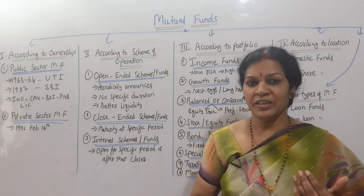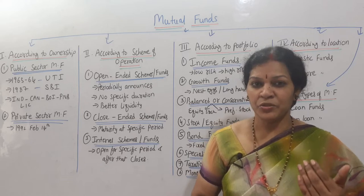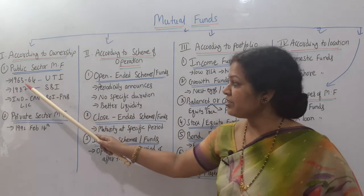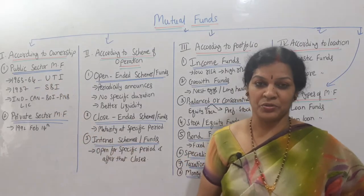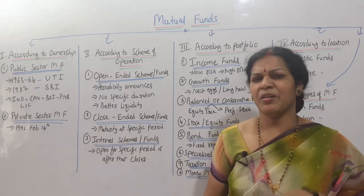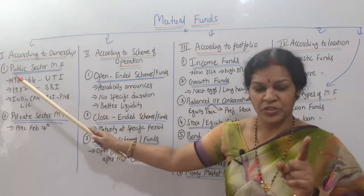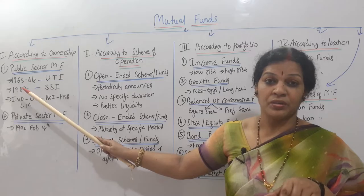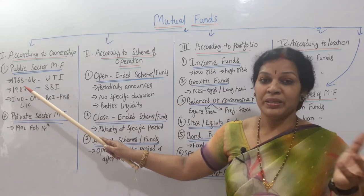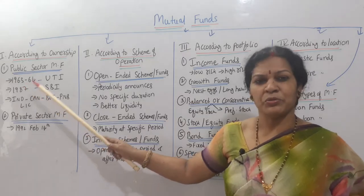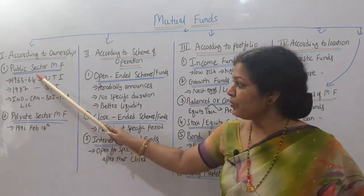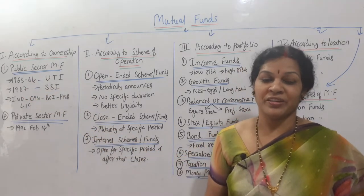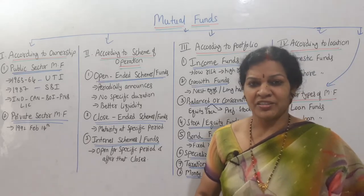In India, the first mutual funds were introduced by the Unit Trust of India (UTI) in the period 1963–64. That was the first public sector mutual fund in our country. There was a lot of demand that UTI could not manage alone. So later, in 1987, SBI entered into mutual funds. Then SEBI gave opportunity and licenses to other banks as well.